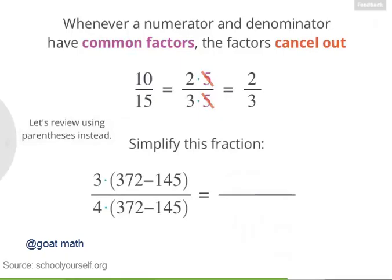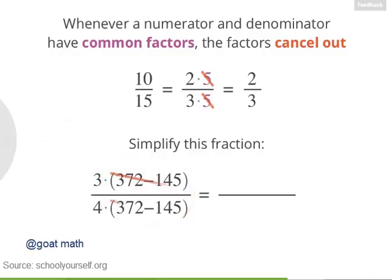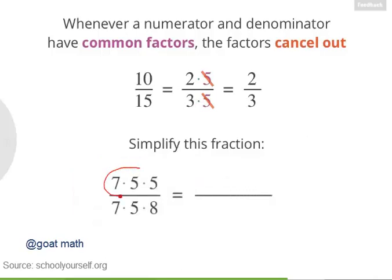Right, there's no need to evaluate 372 minus 145. It's a common factor in the numerator and denominator, so it cancels out. This fraction is equal to 3 fourths. Try another example: 7 times 5 times 5 over 7 times 5 times 8. Here, there's more than one factor you can cancel out.